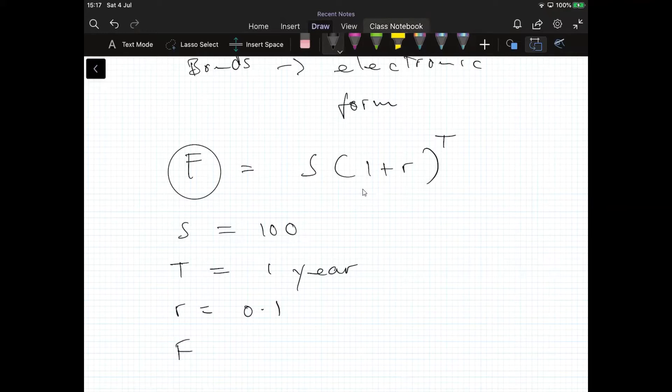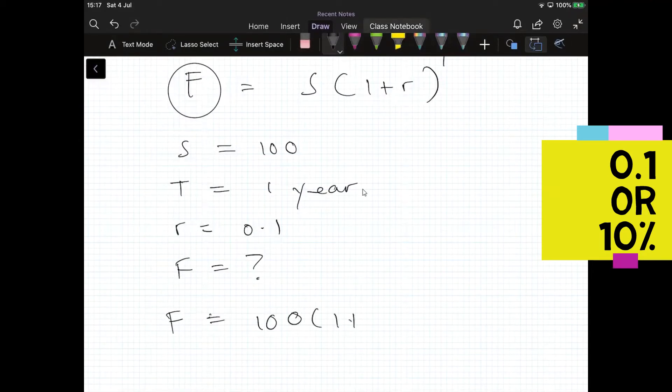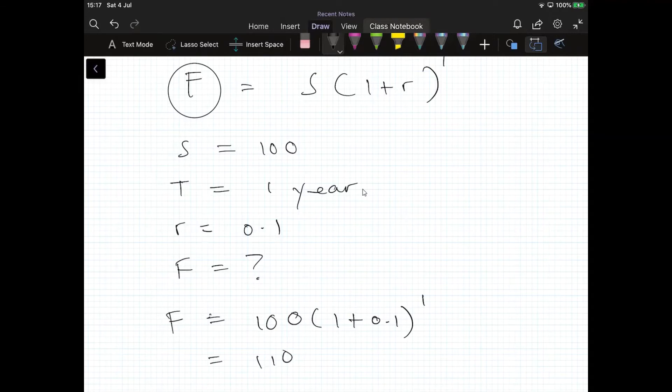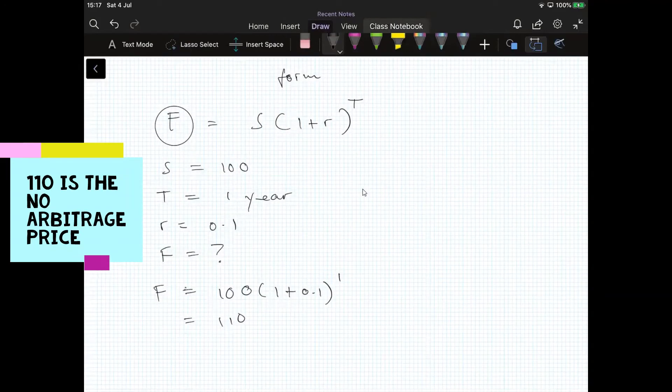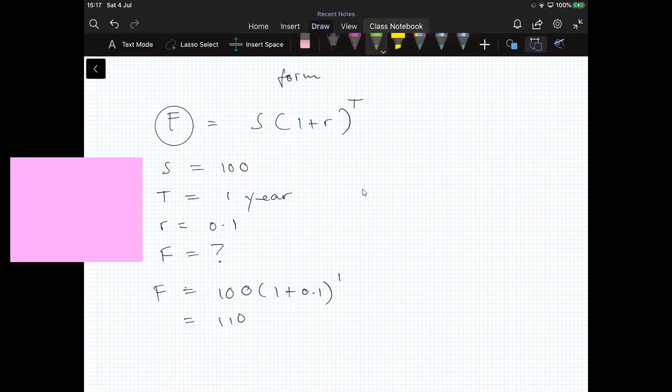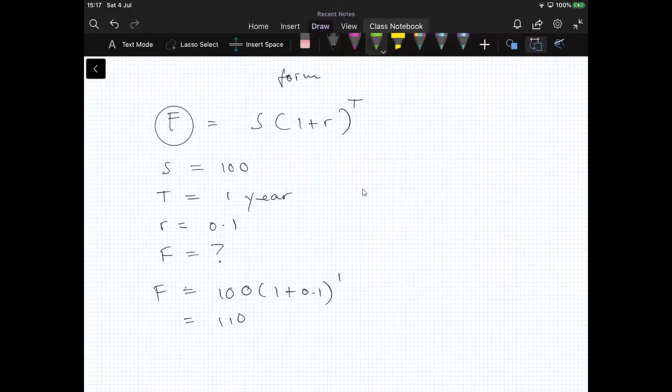The futures price could be obtained simply by taking that 100, the spot, multiplied by one plus 0.1 to the power of one, and that would give 110. That implies if there's no other storage costs, if there's no other relevant costs, and there's no convenience yield, then for the market to be in equilibrium, the futures price must be equal to 110 and the spot price must be equal to 100.